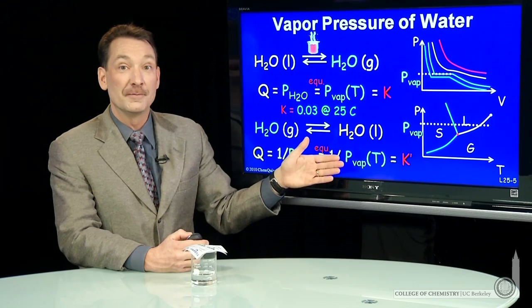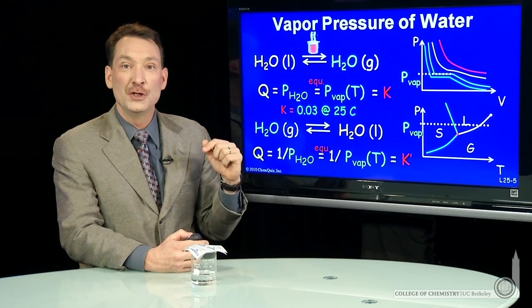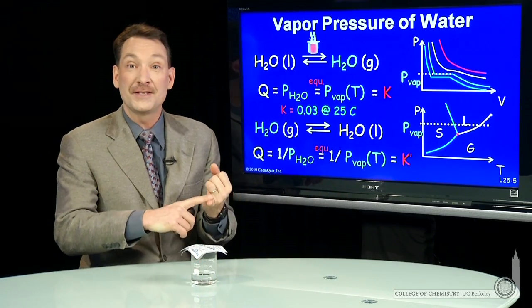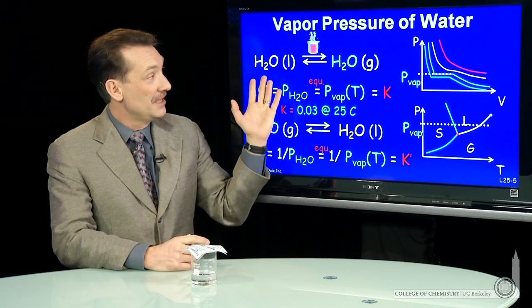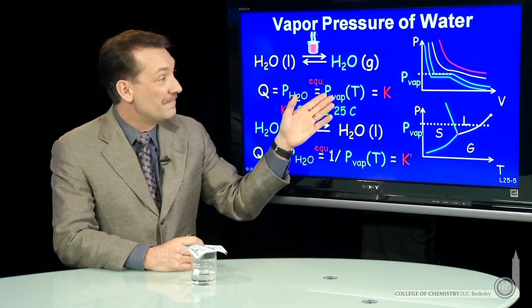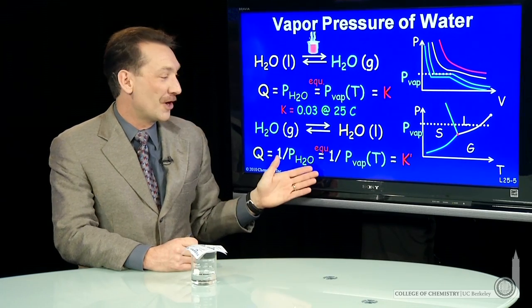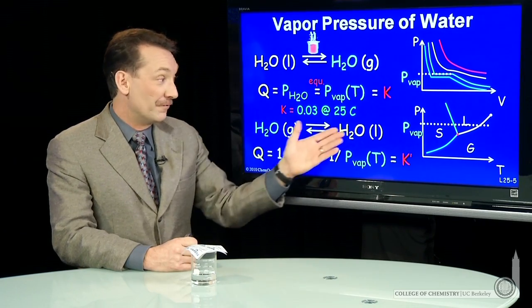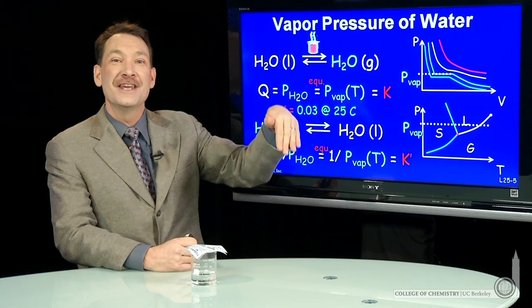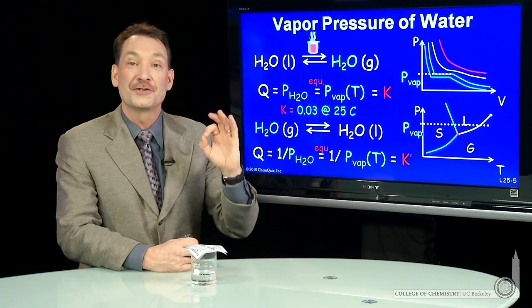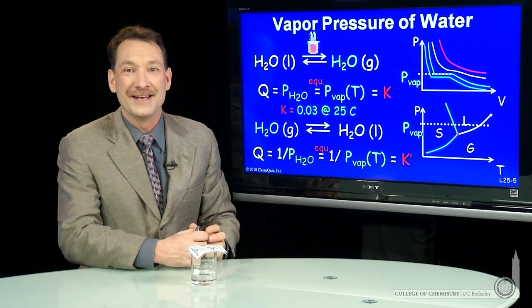So equilibrium expressions, when we write Qs and Ks, we omit pure liquids and solids. In these physical equilibria, vapor pressure and K are equivalent, and they are functions of temperature that we already understand. If we reverse a reaction, we invert the equilibrium constant. Those are the properties of Q and K.